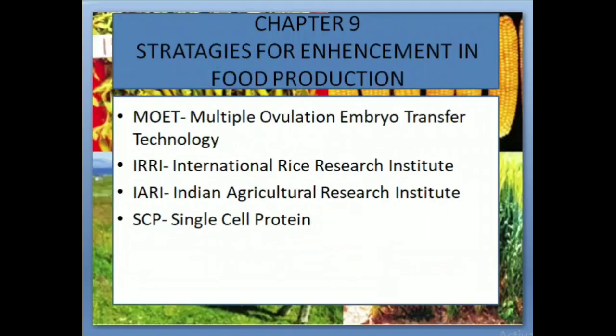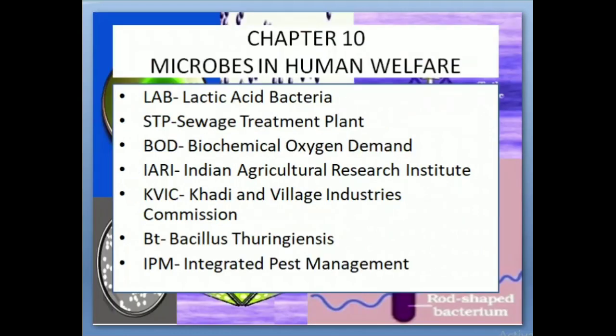Chapter 9: Strategies for Enhancement in Food Production. MOET: Multiple Ovulation Embryo Transfer Technology. IRRI: International Rice Research Institute. IARI: Indian Agricultural Research Institute. SCP: Single Cell Protein. Chapter 10.